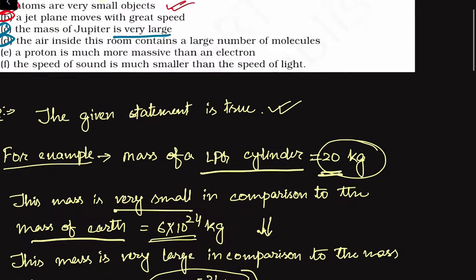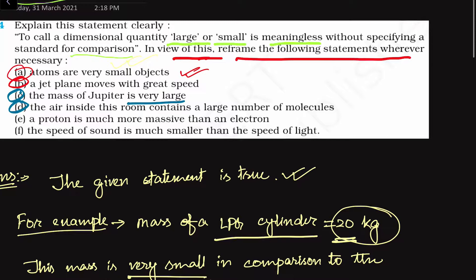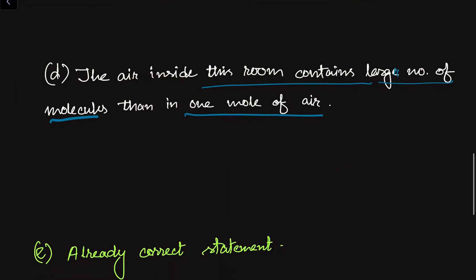Now let us go to our fifth part. We are given that a proton is much more massive than the electron. Here the comparison is done with reference to the electron. We have compared the mass of the proton in comparison to the electron, and the statement already makes this clear — it is more massive than the electron. So this statement is correct and there is no need to add any extra comparison. This is already a correct statement.